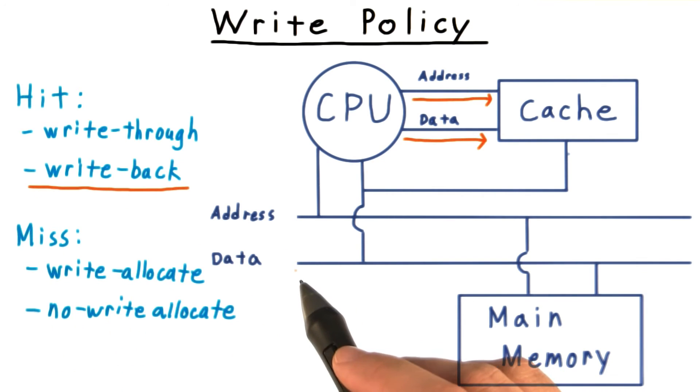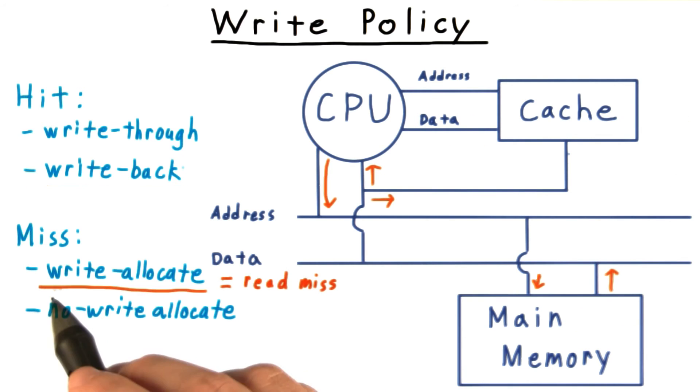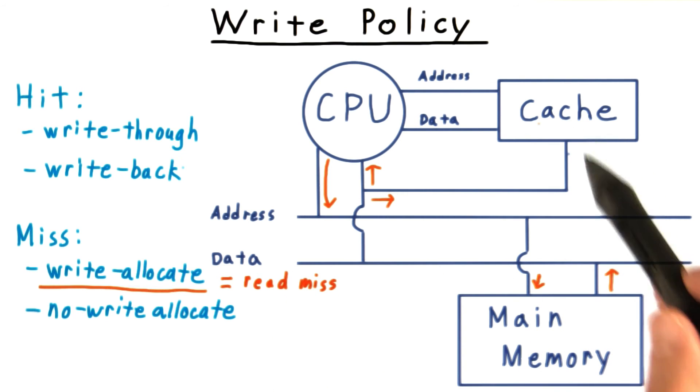The write-back policy is betting that there will be subsequent writes to the same cache block. That's why it bundles up all the changes for one trip to memory when the block gets evicted. Write-allocate is also betting on subsequent writes to the same block. That's why it loads the data up into the cache.